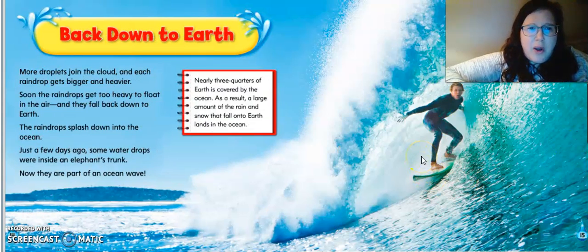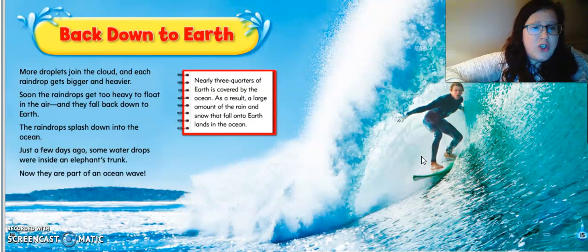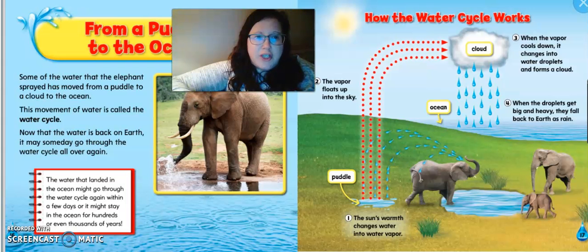Back down to earth. More droplets join the cloud and each raindrop gets bigger and heavier. And soon the raindrops get too heavy to float in the air and they fall back down to earth. The raindrops splash down into the ocean. Just a few days ago, some water drops were inside an elephant's trunk and now they're part of an ocean wave. Nearly three quarters of earth is covered by the ocean. As a result, a large amount of rain and snow that fall onto earth lands in the ocean.